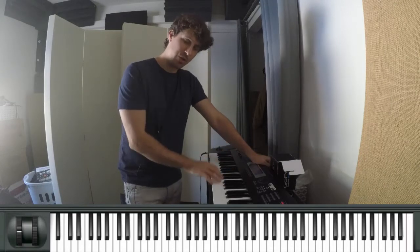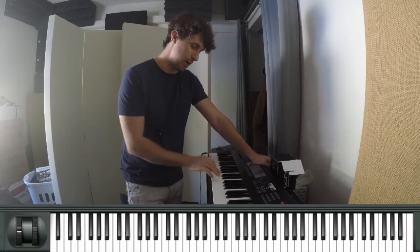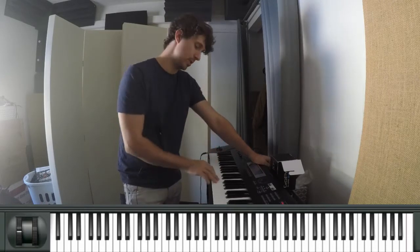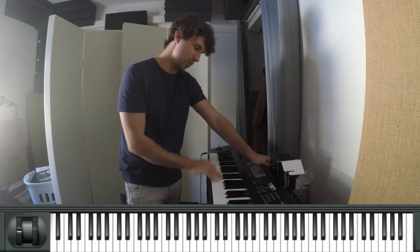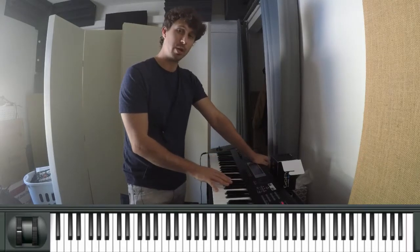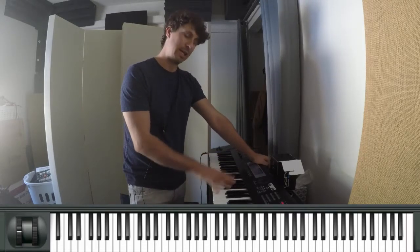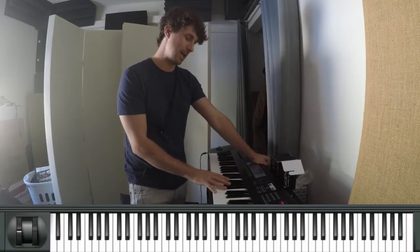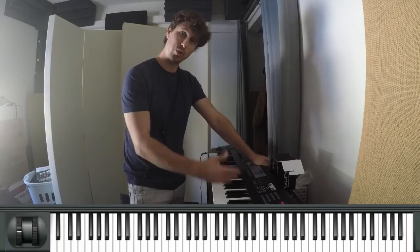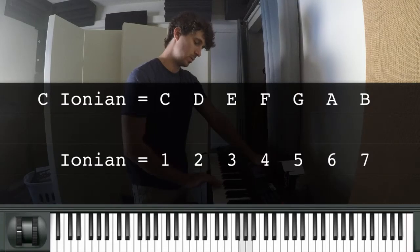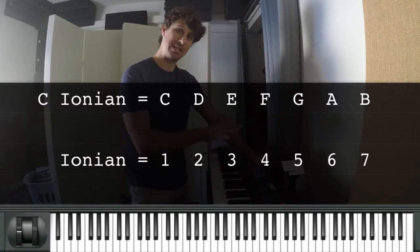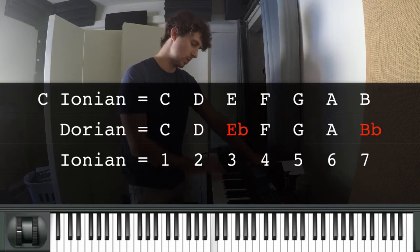So we're going to define all the parallel modes of C against C Ionian. C major is one, two, three, four, five, six, seven. Then Aeolian has a flat three compared to major. We're going to go through each mode this way. The second mode is Dorian — this is C Dorian.